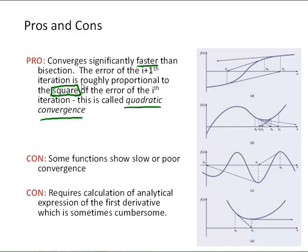I didn't show it either, but for bisection, the error of the next iteration is roughly half of the previous iteration. That shouldn't be surprising because we're cutting the interval in half with each of those bisection iterations. So we do see that Newton-Raphson converges quite a bit faster.